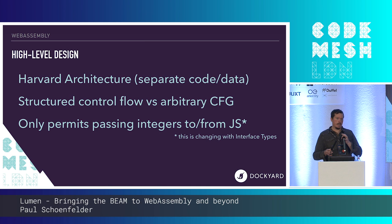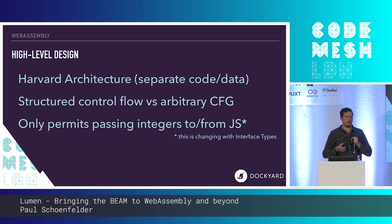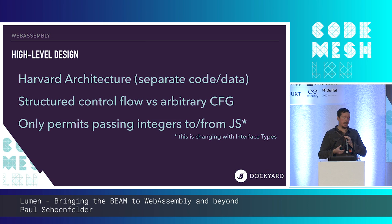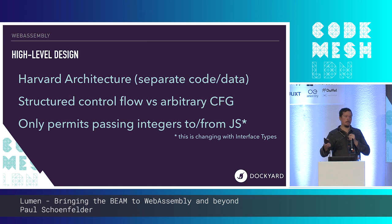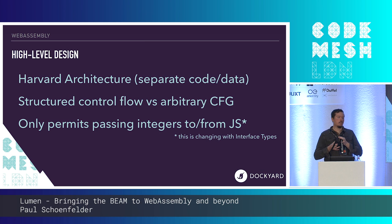The key to that sandboxing and memory safety is the fact that it's a Harvard architecture — the code and data address spaces are separate. It's not possible to take the address of a function and jump to it; they're entirely separate. You can't take the address of any code whatsoever. In order to call a function, you essentially take the index — it's like a big jump table. You say you want to call the function at index zero with these arguments, and it will fail if that function doesn't exist in the function table.